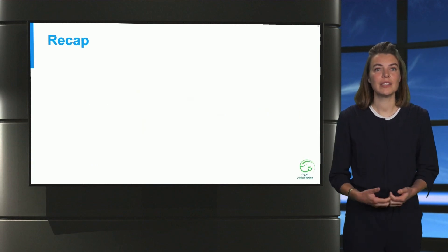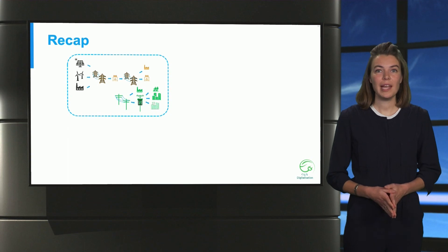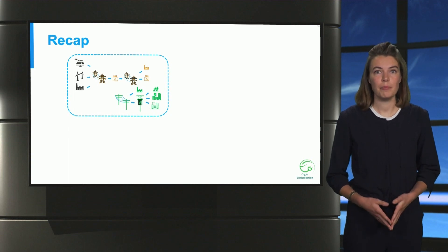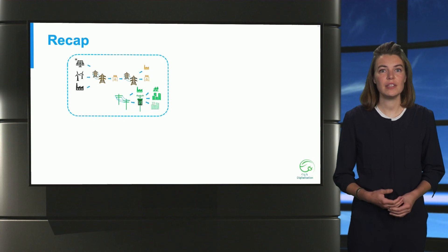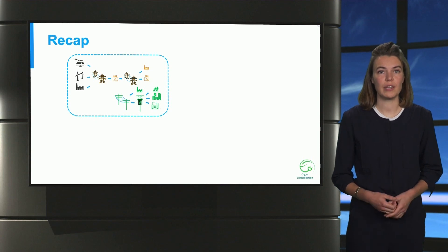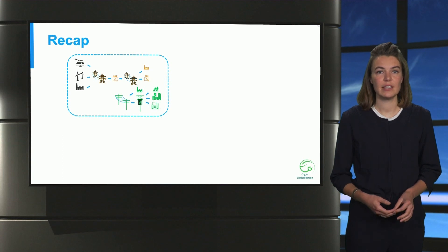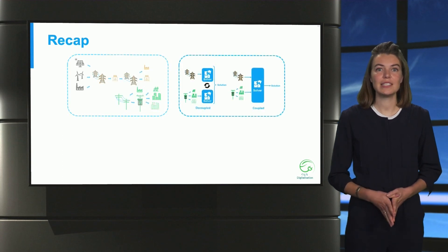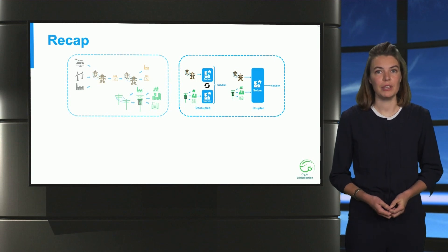Let us summarize. We explained that the transmission grid is meshed, balanced, and requires only a single phase simulation as opposed to the distribution grid. Also, both parts are handled by different entities. Then, we saw that it is needed to couple them in the future. For this, two methods can be used: a decoupled and a coupled approach.